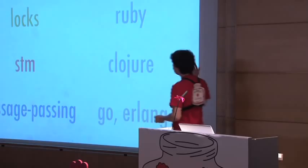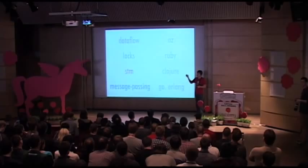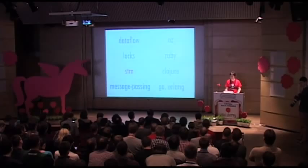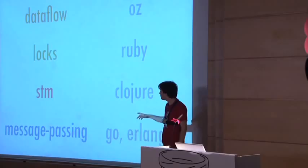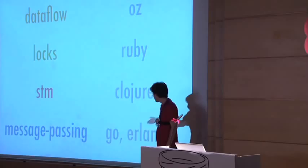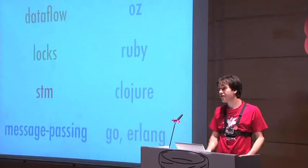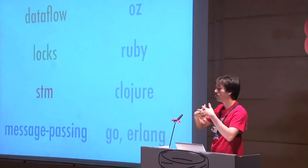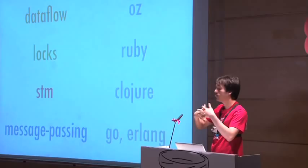How can you learn more? For dataflow, there is a language called Oz that implements it. For locks you can use Ruby or Java or C with thread libraries. For software transactional memory there is Clojure. For message passing there is Go and Erlang — Go uses channels, Erlang uses the actor model, they're a bit different. Haskell implements all of them through libraries, so it's good for running benchmarks across models in the same language.